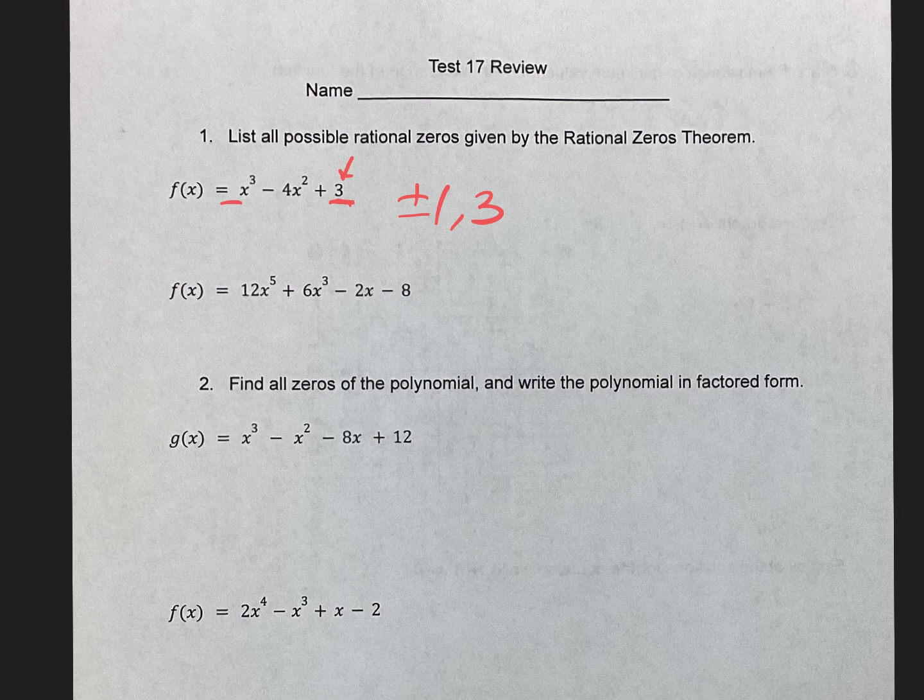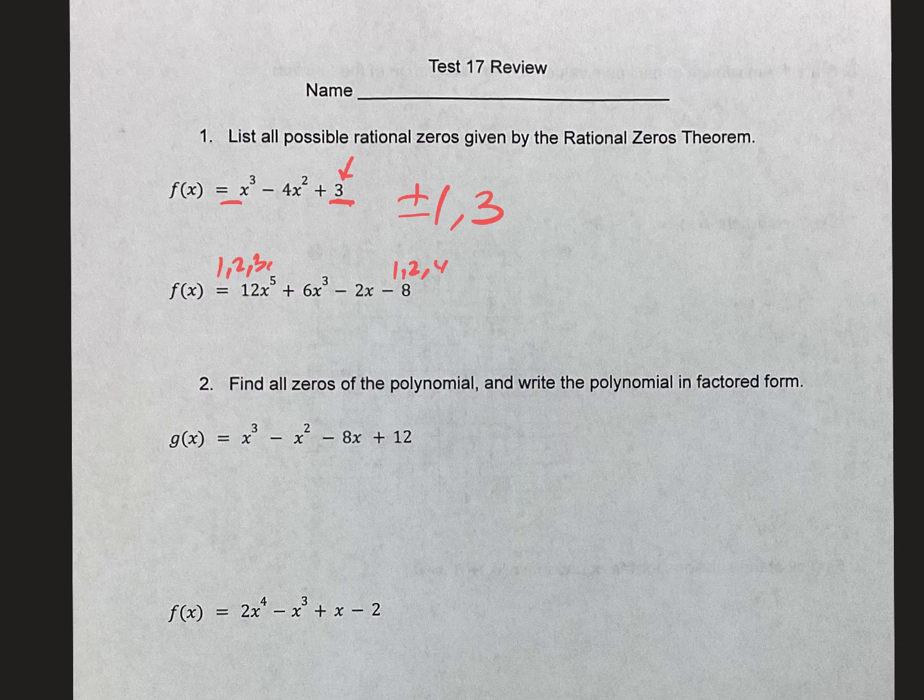When I get to the second part, the factors of 8 are 1, 2, and 4. The factors of 12 are 1, 2, 3... there's a bunch of them. I forgot the 4 over 4, 6, 12. So I'm going to put all of these over all of those.